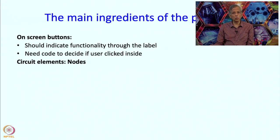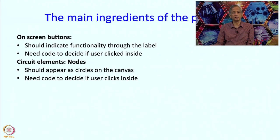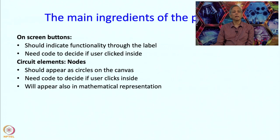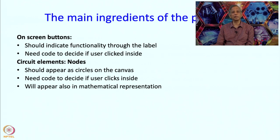There are circuit element nodes, which appear as circles on the canvas with their number inside. We need code to decide whether a click is inside a node. Nodes also appear in the mathematical representation of the circuit — we do not just want to draw, we want to solve. So as the drawing is made, we will be building up a representation of the circuit itself, collecting all its data and putting it into a convenient data structure.